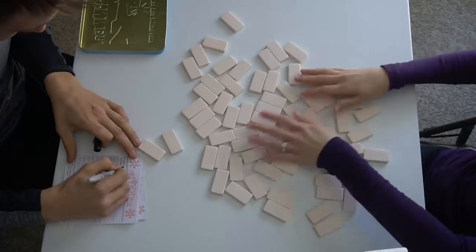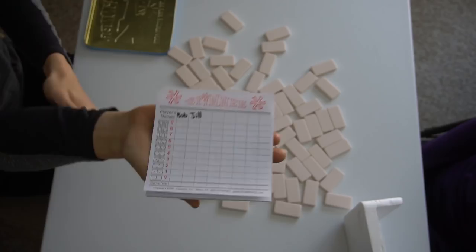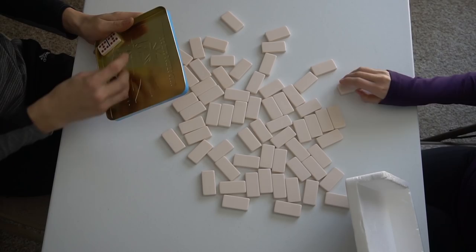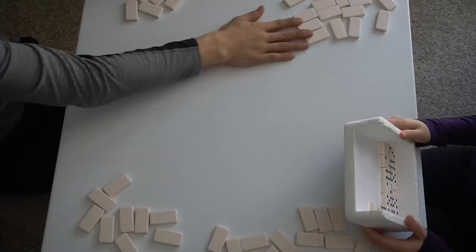This game will be Bob versus Jill. Each game takes ten rounds to complete. To begin, flip all the dominoes face down and shuffle well. Then each player takes seven dominoes and puts them in their hand or anywhere you want, just so other players cannot see them. The remaining dominoes will be your draw pile.